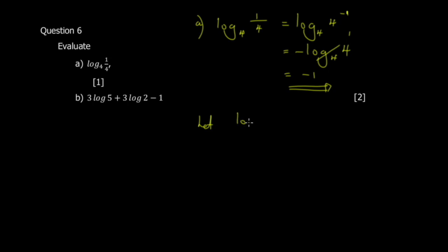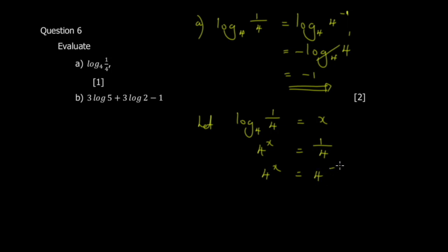Another way is to let log base 4 of one quarter equal x. Then you rewrite it in exponential form: 4 to the power x equals one quarter, which is 4 to the negative one. So x equals negative one.